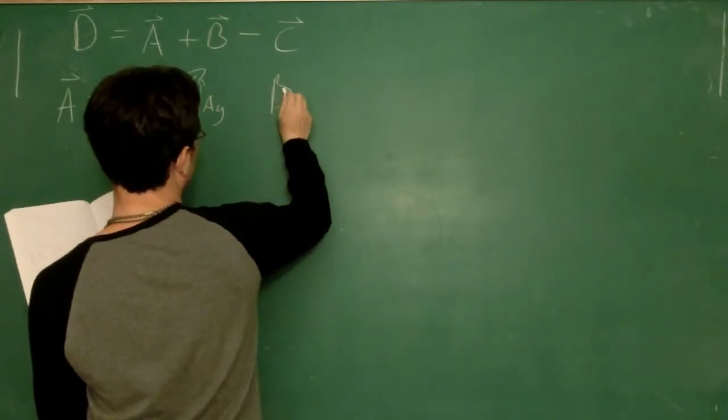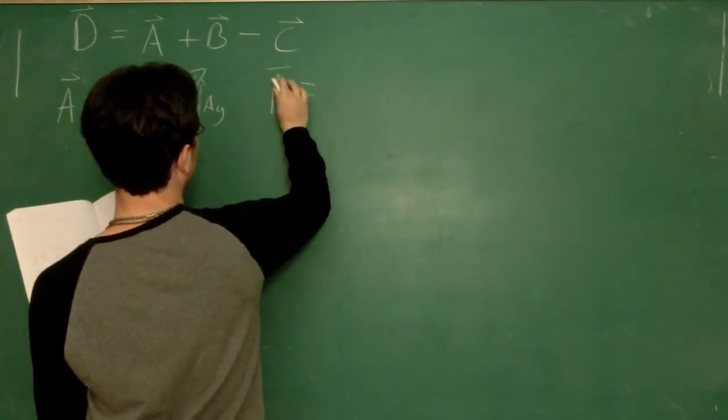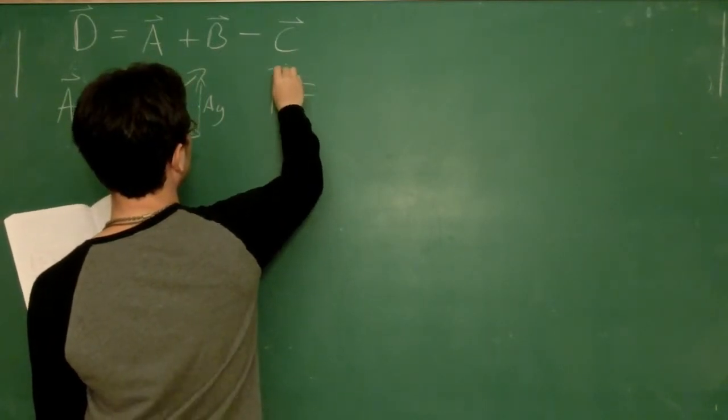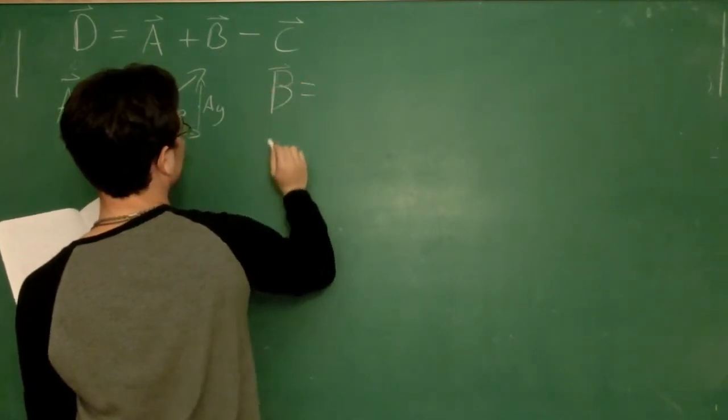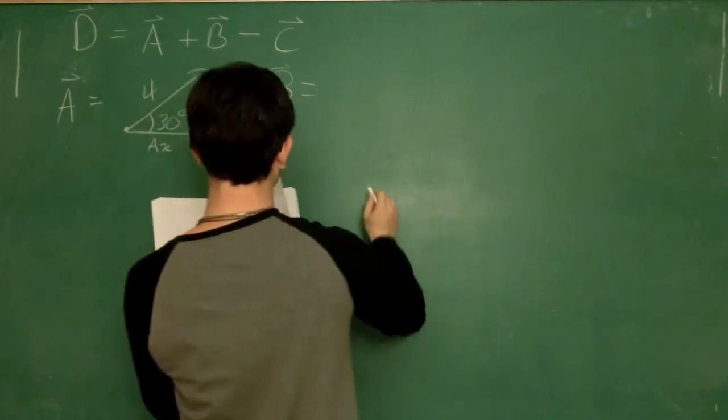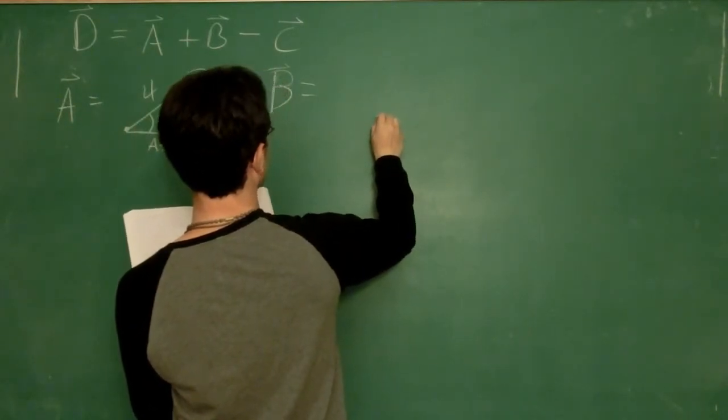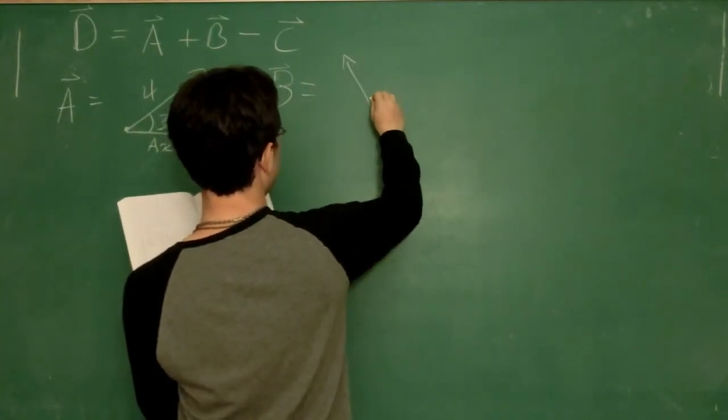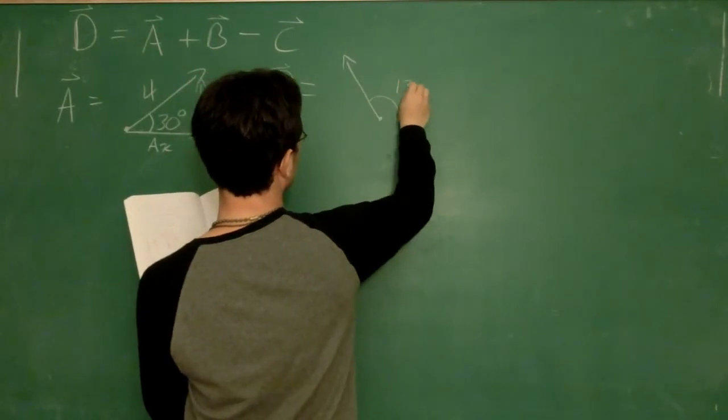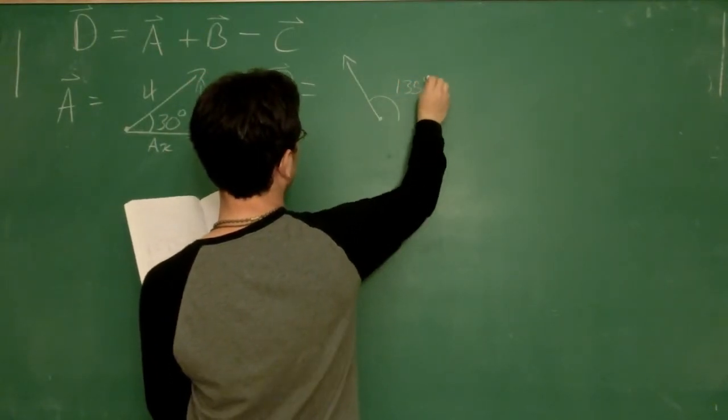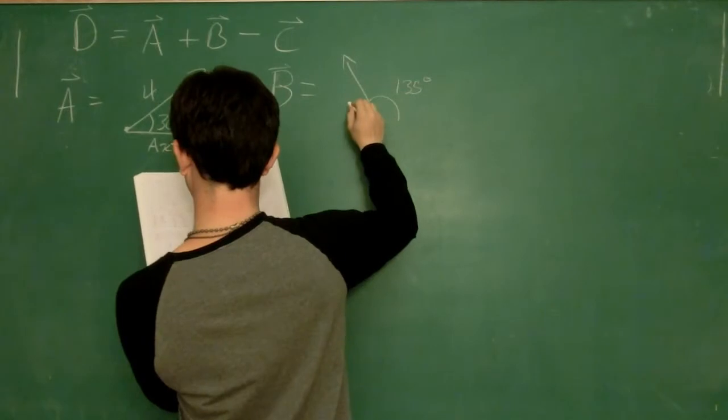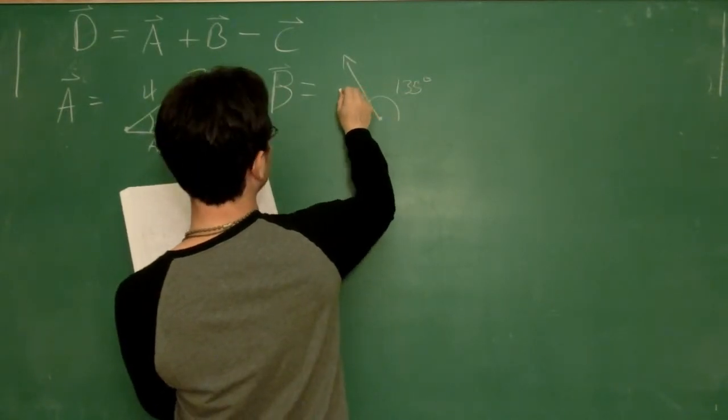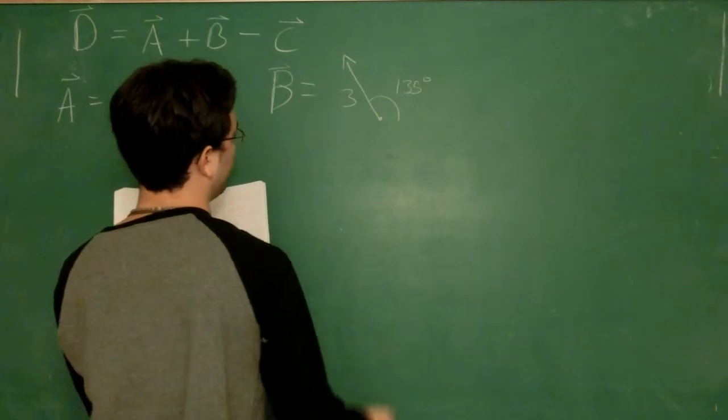So the next vector is going to be B. It looks like this, and it makes an angle of 135 degrees with the positive x. Total length of 3.